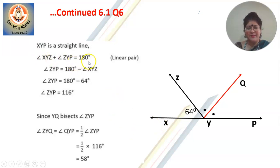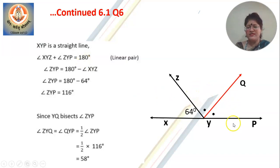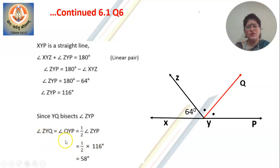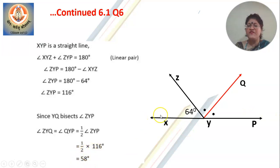Now use angles in a linear pair. Angle XYZ plus angle ZYP equals 180 degrees. From that you can calculate angle ZYP — ZYP will be 116 degrees. After calculating angle ZYP, they have also mentioned YQ is the bisector. So if YQ is bisecting angle ZYP, make a statement: angle ZYQ equals angle QYP, and both of them are half of angle ZYP. So what will each angle be? It will be 58 degrees. That means ZYQ is 58 degrees and QYP is also 58 degrees.